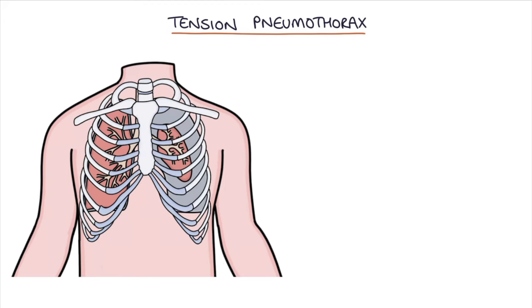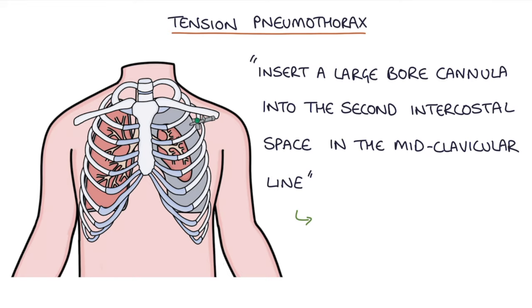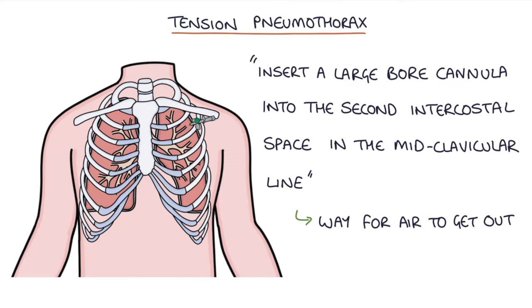How do you manage a tension pneumothorax? The management is something worth memorizing for your exams, and the answer is to insert a large bore cannula into the second intercostal space in the mid-clavicular line. This creates a way for the air to get out of the pleural cavity and relieves the tension so the lungs can re-expand and the mediastinum and cardiac vessels can return to their normal place.